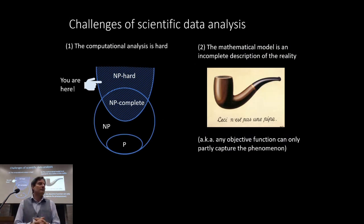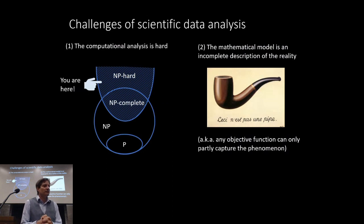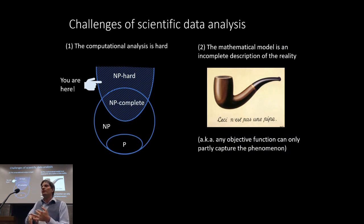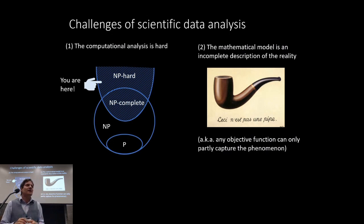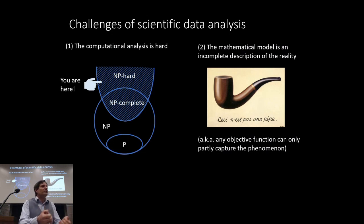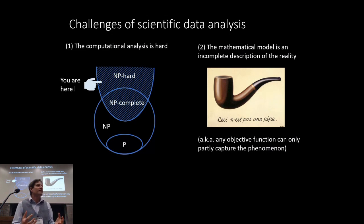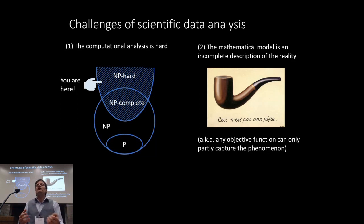What are the challenges of scientific analysis? When taking experimental data, you face multiple challenges. First, like any interesting problem, it's often NP-hard — it takes a lot of time to compute, and we rely on heuristics and algorithms to approximate an answer. But arguably that's not even the most important problem, because we don't even have access to the ground truth.